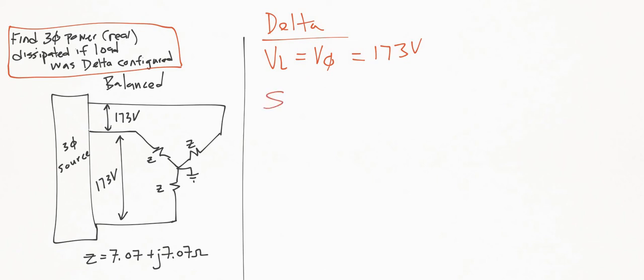Now using that 173 volts, we can find the apparent power per phase as equal to V squared divided by the impedance Z. When we do that, we get 173 squared divided by 7.07 + j7.07 ohms. When I solve that and put it into polar coordinates, I get 2990∠-45°.